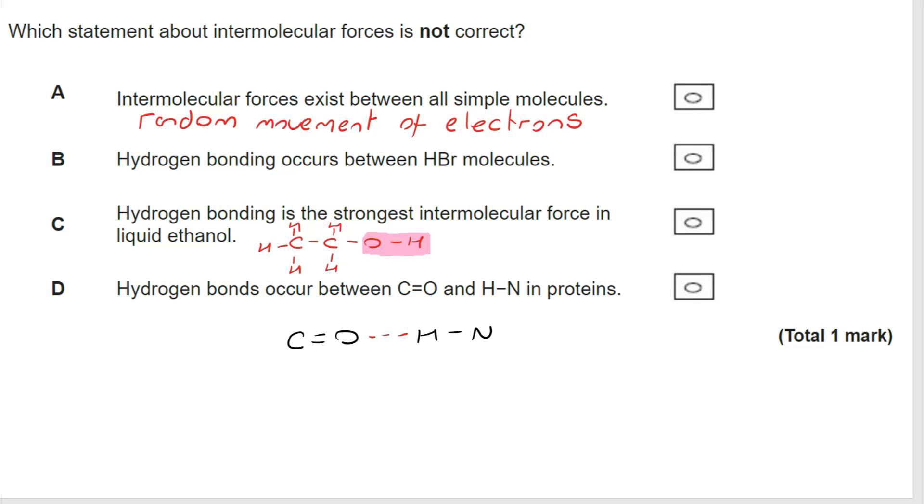Hydrogen bonding can occur between a C=O bond and an H-N in proteins. Absolutely. I've drawn one in there, but we've got the very delta positive and our delta negative oxygen. So we are going to get a hydrogen bond there. So that leaves us with hydrogen bonding occurring between HBr molecules. And again, just to restate what I've just said, hydrogen bonding can only exist if the H is bonded to an N, an O or an F.